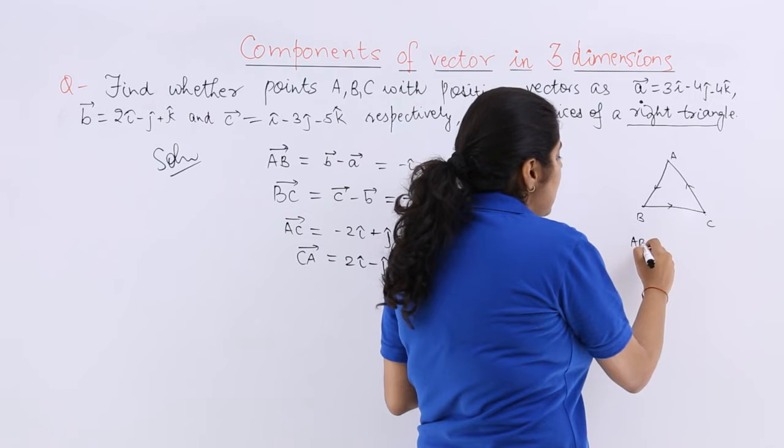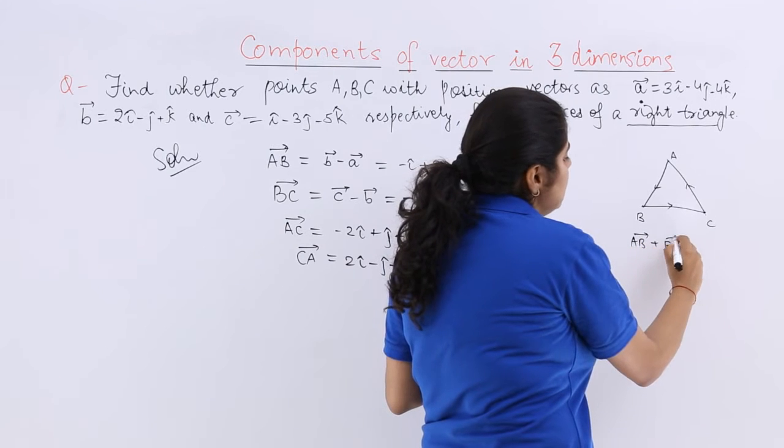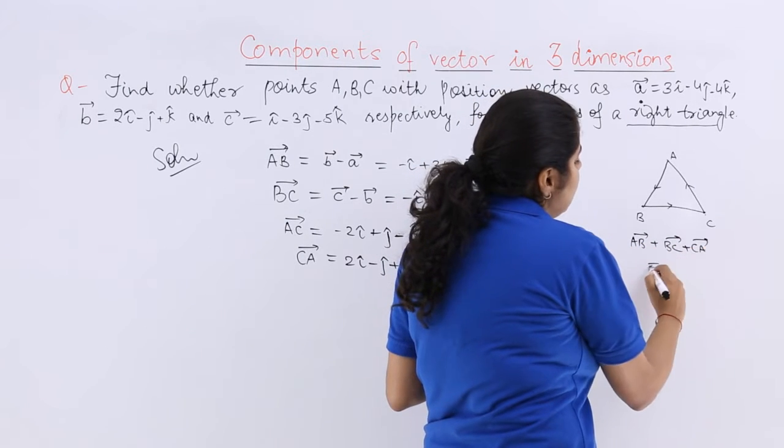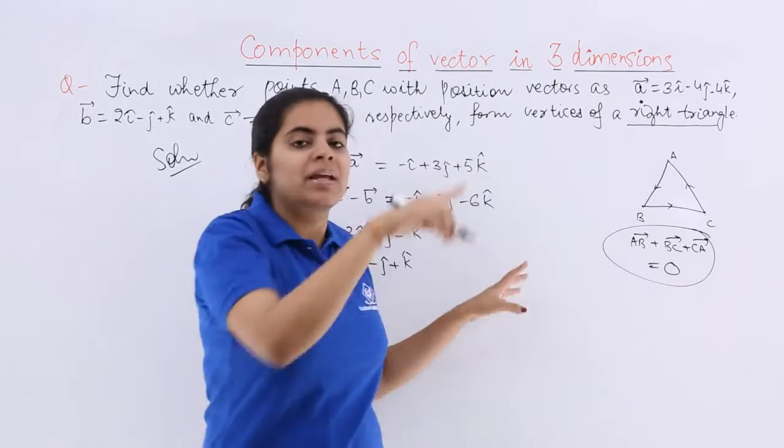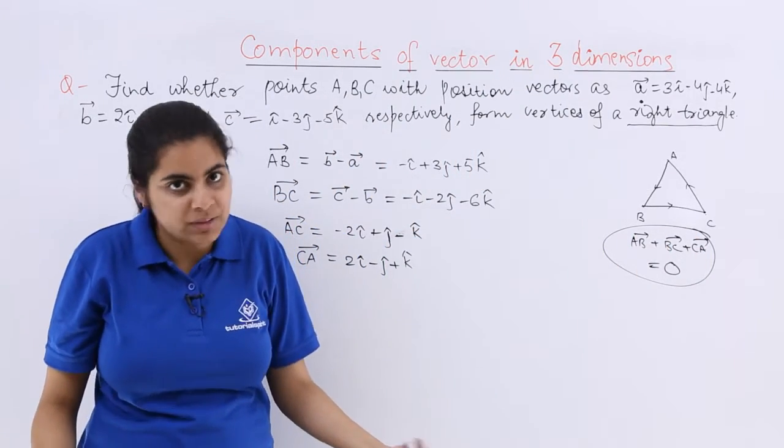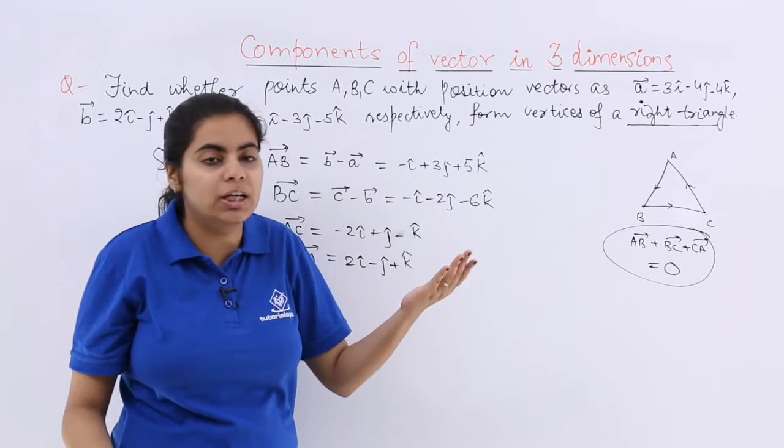Now if I say I am adding up AB plus BC plus CA vector and it comes out to be 0, that means a closed loop, that means a triangle is formed. We studied this in the theoretical part.